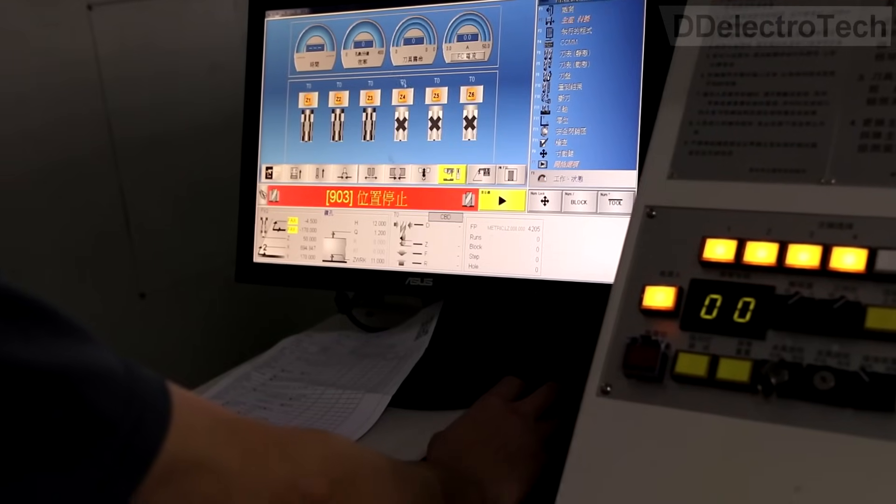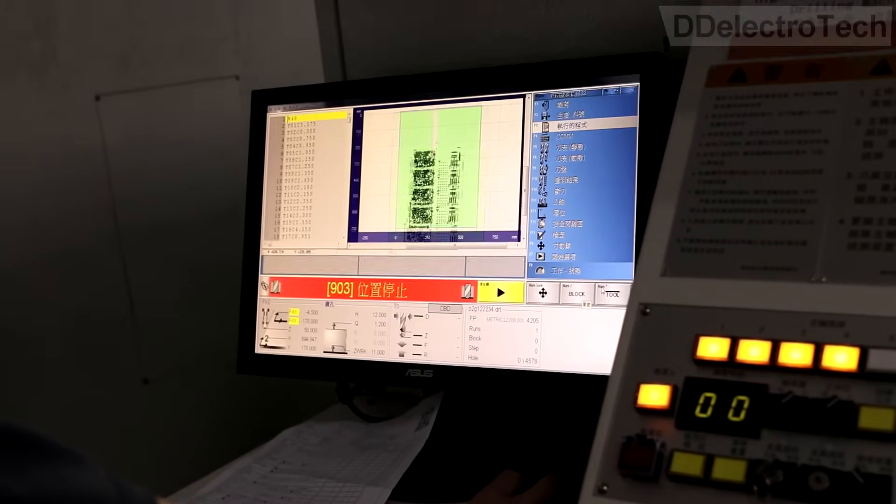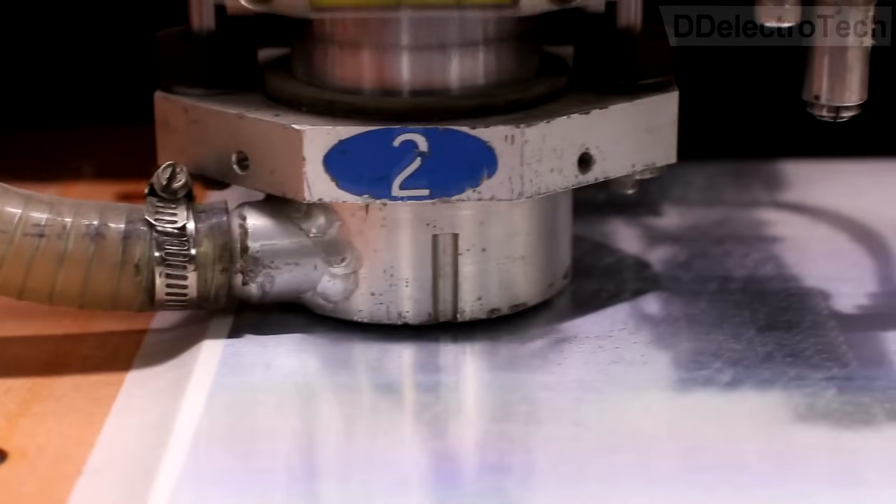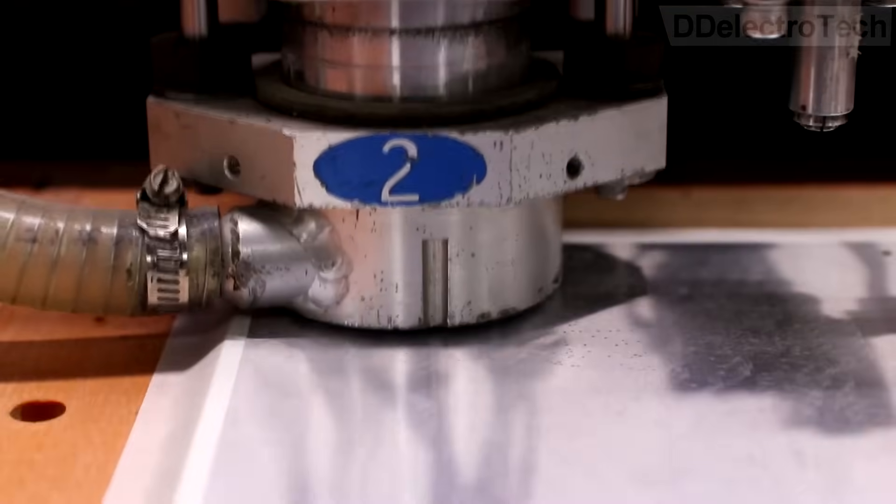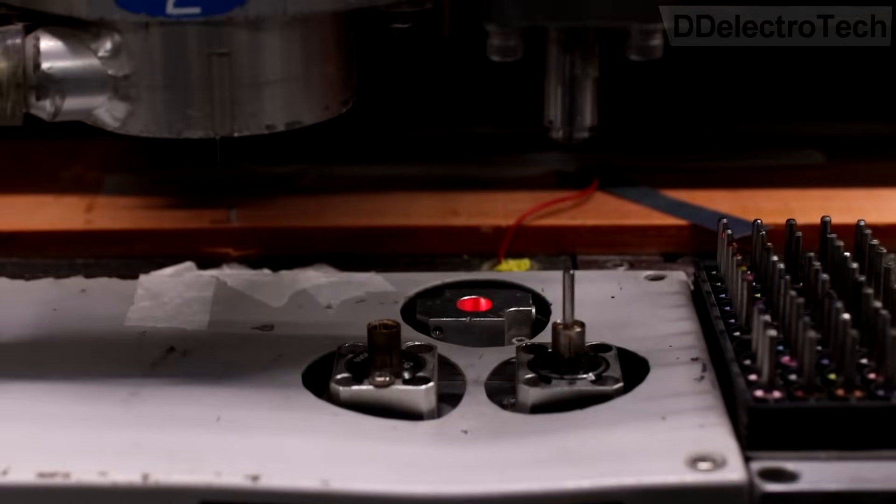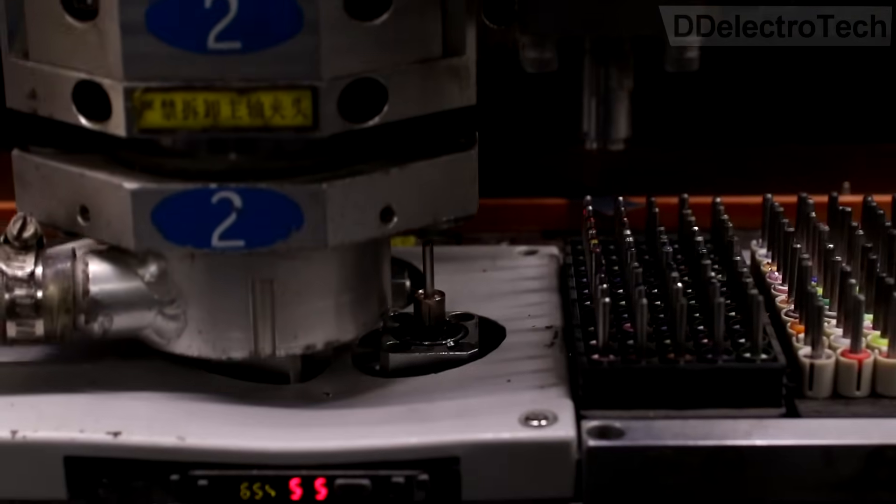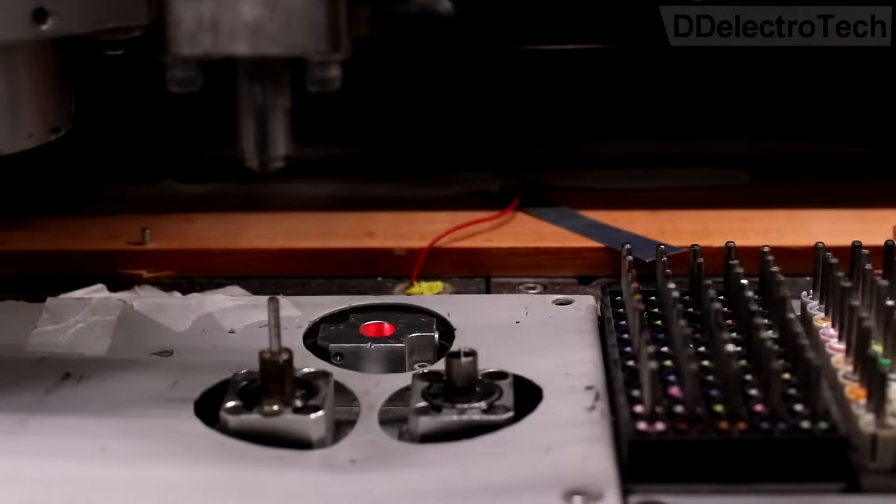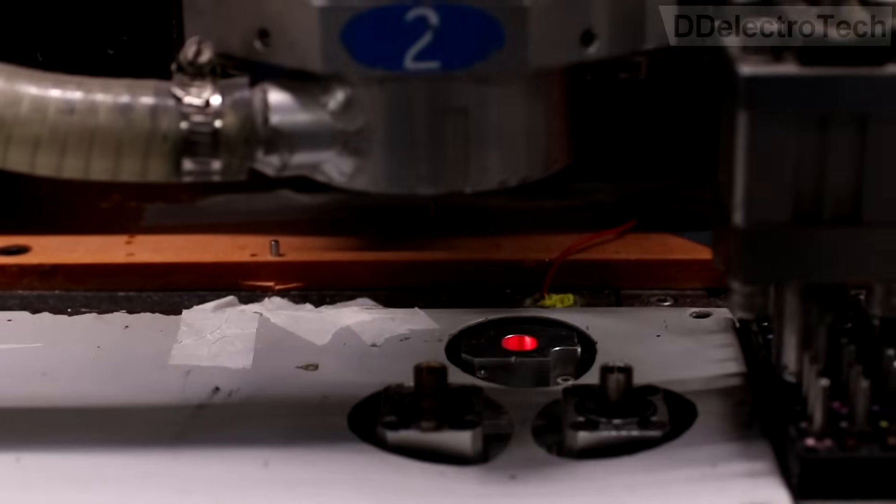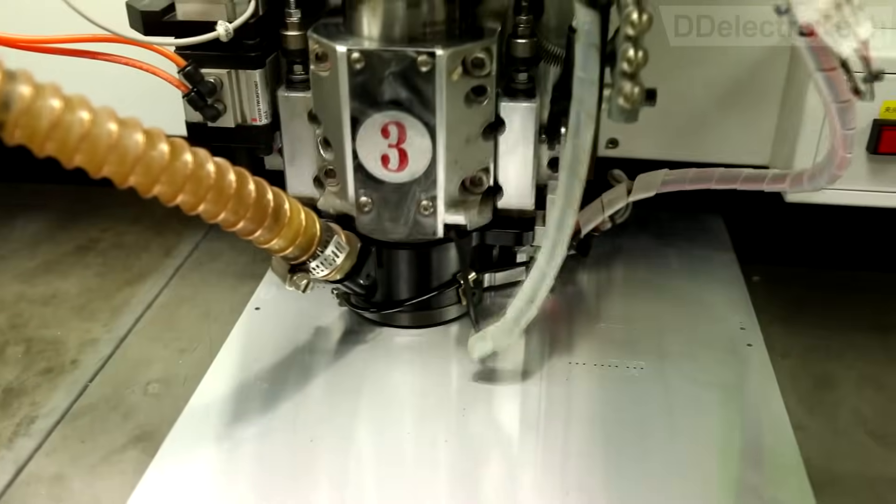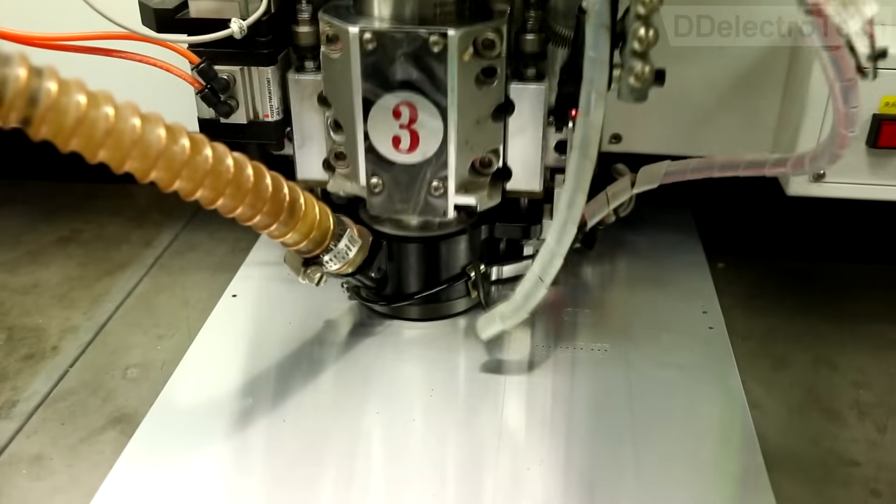These machines are computer-controlled. After selecting the right drill program, the machine starts working. Drill change is fully automatic - the machine selects the drill to use from the drill rack, checks that it's the correct size, and then loads it into the drill head.